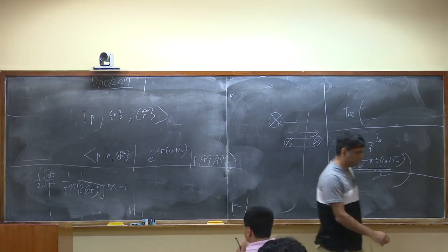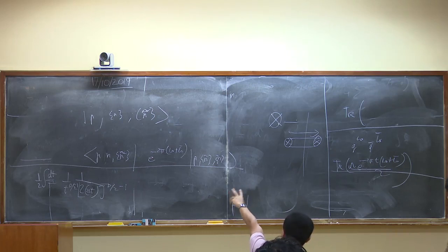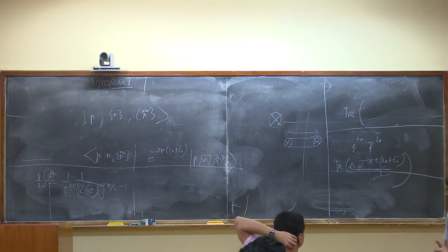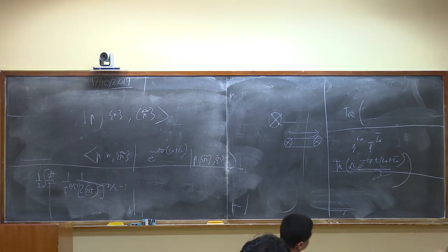How is this condition different from level matching? Level matching tells you that the total level of the left movers equals the total level of the right movers. This condition is telling you that the occupancy state by state is equal — that is much stronger and cuts down the degrees of freedom significantly.